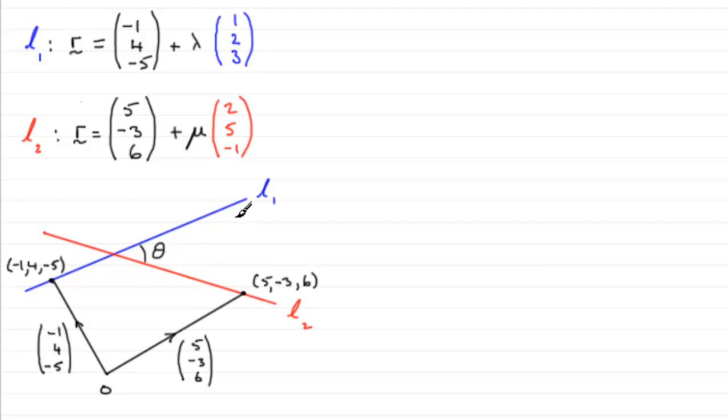So, the angle between the two lines has nothing to do with the angle between these two vectors. The angle theta has something to do with these two vectors.